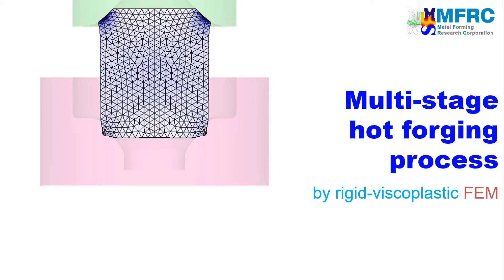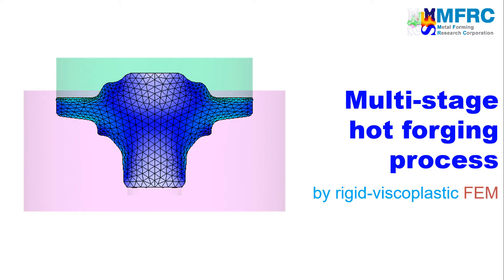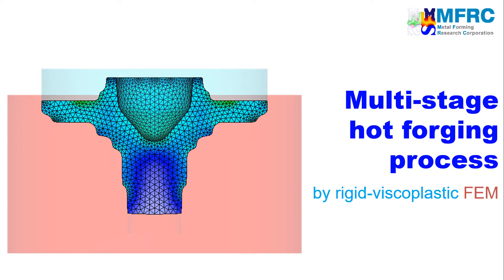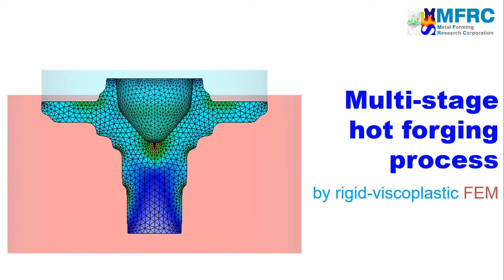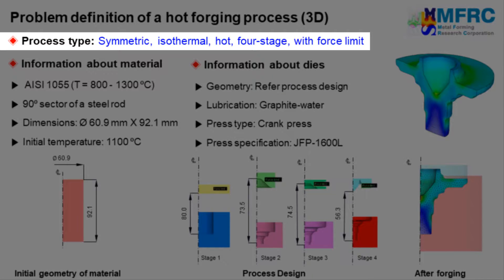In this video, you will learn how to simulate a four-stage hot forging process using the isothermal analysis module of Afdex3D, the intelligent metal forming simulator. Let's get started with the process type first. Since the geometries of the workpiece and the dies are symmetric, we will carry out a 3D simulation of a 90-degree sector of the component. The temperature change will not be considered in the simulation, so this will be an isothermal simulation.